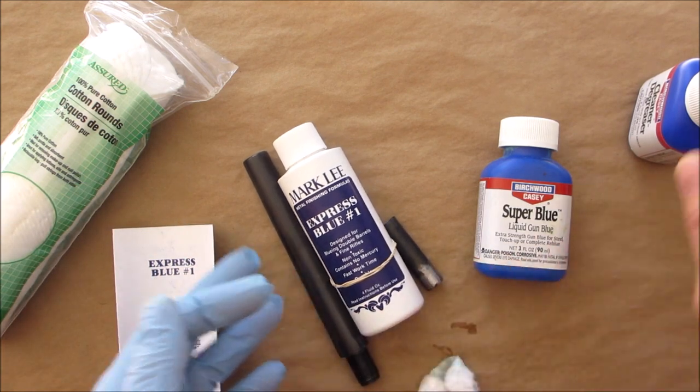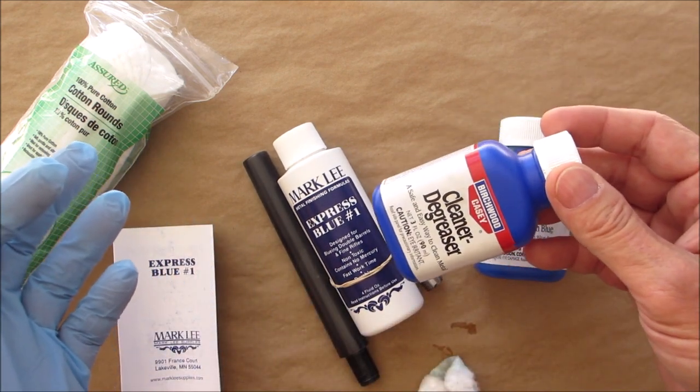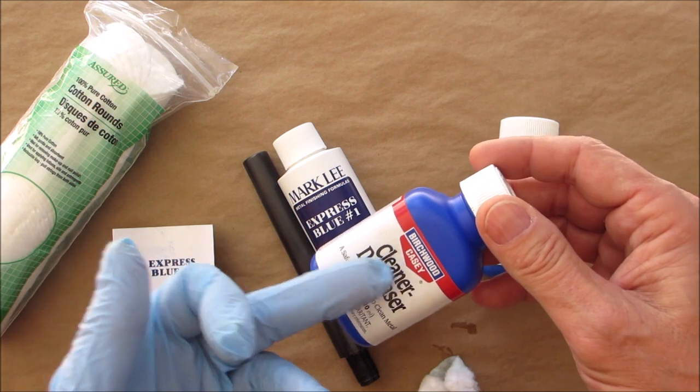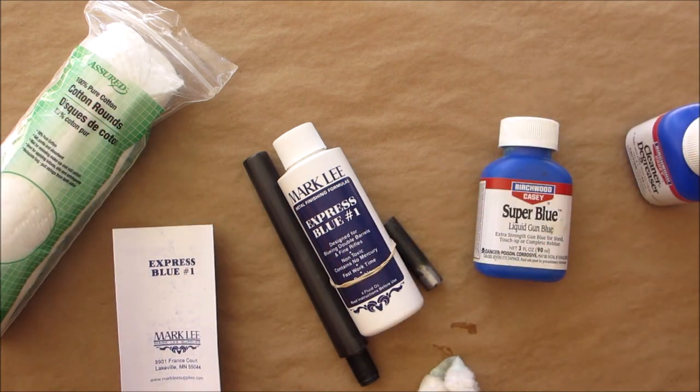And don't forget to get some kind of degreaser. This is specifically called the Cleaner Degreaser. You could use denatured alcohol. I wouldn't use isopropyl alcohol or any of that stuff. It's not pure enough to really, really clean it good. So again, there you go. Just a quick little thing on bluing. I definitely advise if you're doing a firearm or something, use this Express Blue.